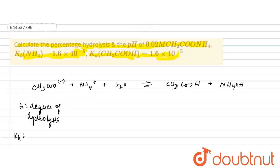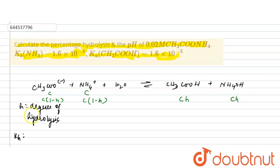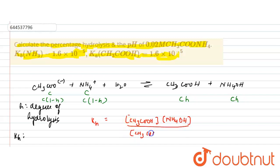If the initial concentration is C for both ions, then at equilibrium we have C(1−H) for each reactant ion and CH for each product, where H is the degree of hydrolysis and C is the initial concentration. KH equals the concentration of CH₃COOH and NH₄OH divided by CH₃COO⁻ and NH₄⁺.